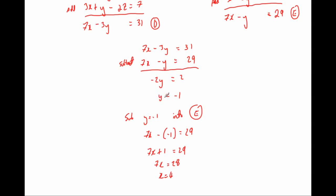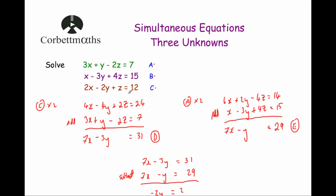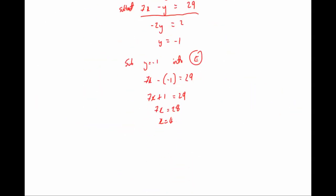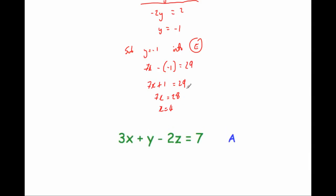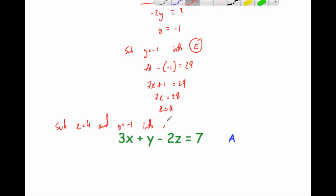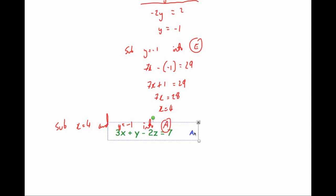So we know that y equals minus 1 and x equals 4. We've used equations D and E. Now we go back to the original equations and substitute both known values into one of them. Let's choose equation A and substitute x equals 4 and y equals minus 1.